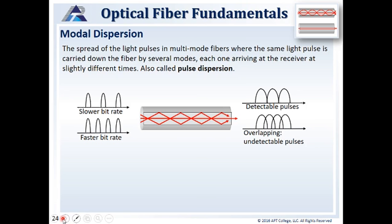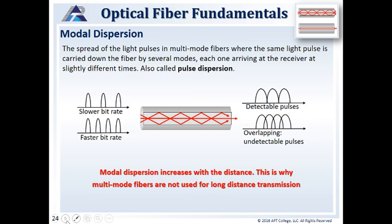Modal dispersion is the spread of light pulses in multimode fibers where the same light pulses carried by several modes each arrive at slightly different times — also called pulse dispersion. At a slower bit rate, some modes are still traveling a longer distance, so pulses are not as separated. If we have a faster bit rate going through the same modal dispersion, we end up with overlapping pulses on the receive side, and in some cases we can't tell these are separate pulses. Modal dispersion increases with distance — that's why we only use multimode fibers for short-distance communications.